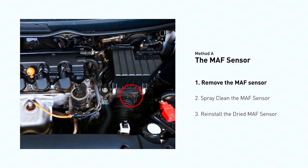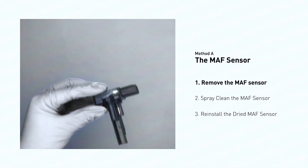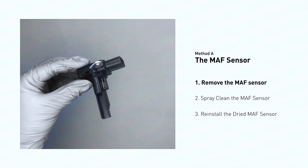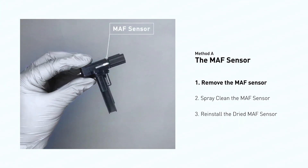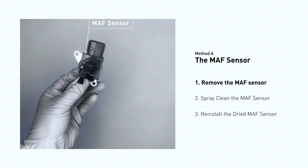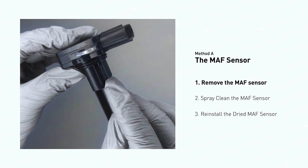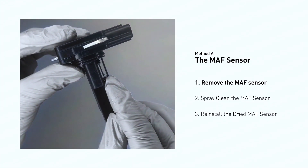MAF sensors are located between the air filter and the throttle body. Carefully remove the MAF sensor from your car and do a quick inspection around the wire — inside it often gets dirty and needs to be cleaned.